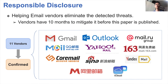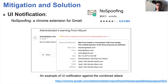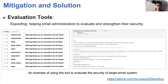We responsibly reported these vulnerabilities to email service providers and received positive responses from 11 of them, including Gmail, Yahoo, iCloud, and Alibaba. All of these vendors committed to mitigation before this paper is published. We also implemented a UI notification scheme in the form of a Chrome extension for Gmail called No Spoofing, and released our testing tool publicly on GitHub for email administrators to assess and improve their security. That's all — thank you.